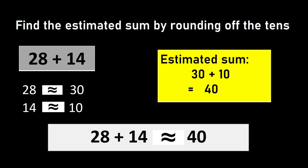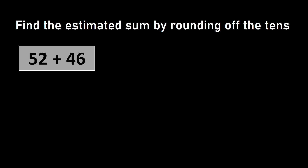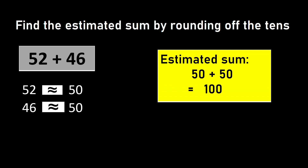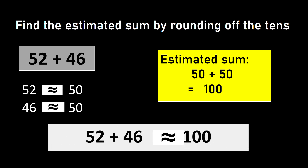Let us see one more example. Here I have 52 plus 46. Here 52 is rounded down to 50 and 46 is rounded up to 50. So the estimated sum is 50 plus 50, which is equal to 100. Hence the sum of 52 plus 46 is approximately equal to 100. This approximately equal to symbol is very important to keep in mind. Instead of this symbol, you should not use the equal to symbol when estimating. Always write the approximately equal to symbol — don't use equal to when estimating the sum.